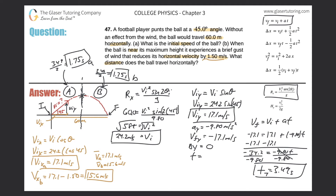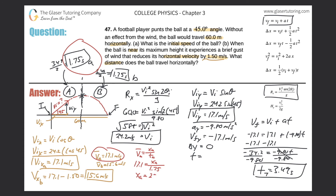Now I can find each displacement. Using average velocity equals displacement divided by time: for Part A, 17.1 equals displacement A divided by 1.75. Cross-multiplying gives 17.1 times 1.75 equals 29.9 meters. That's the horizontal distance covered in Part A.